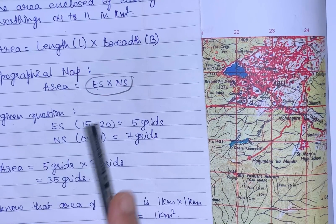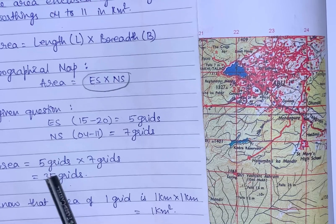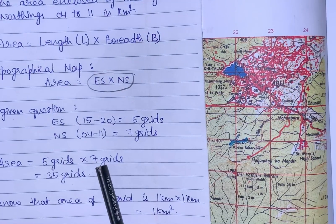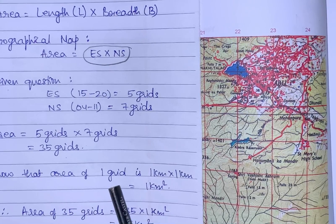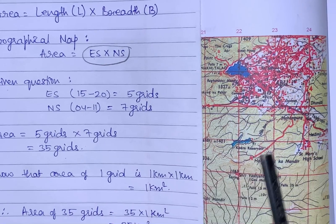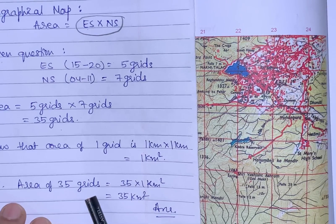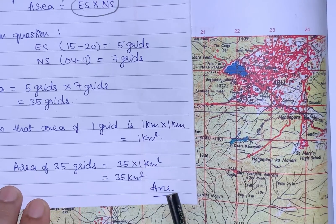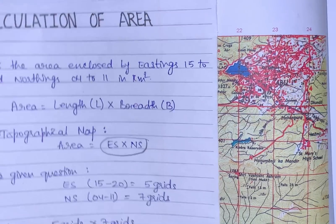Area equals easting times northing. Instead of easting and northing, we have written 5 times 7 equals 35 grids. We know that the area of one grid is one kilometer squared in this topographical map. Therefore, the area of 35 grids will be 35 kilometers square. This will be your answer. This was very simple.